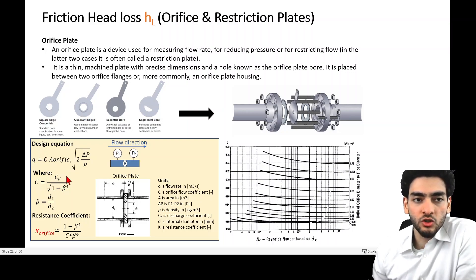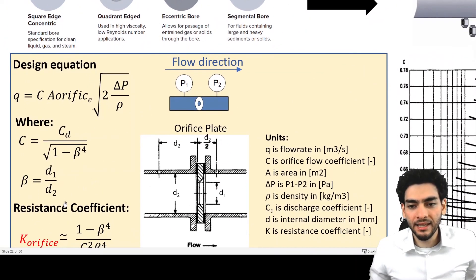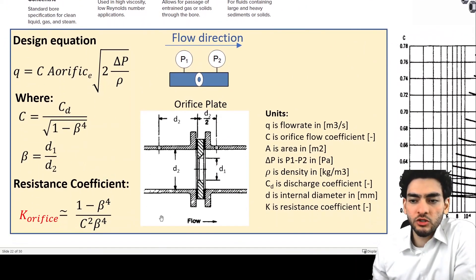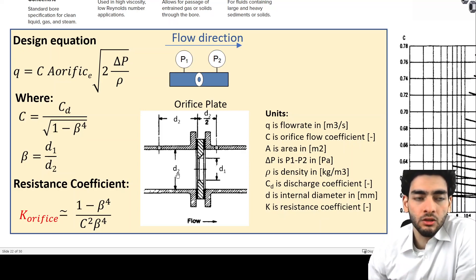You might be wondering what the discharge coefficient is and what beta is. Beta is the ratio of the diameter of the orifice divided by the diameter of the inner pipe that the orifice is installed in. The discharge coefficient is essentially the ratio of actual flow rate that passes through the orifice over the theoretical flow rate.